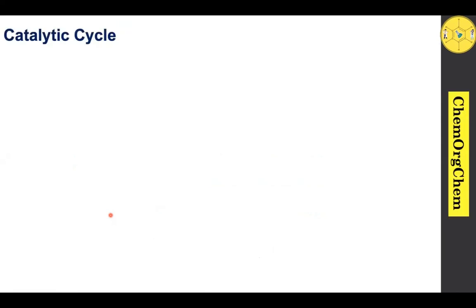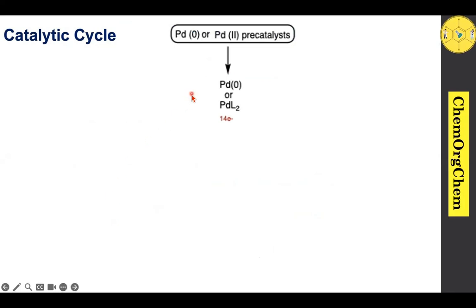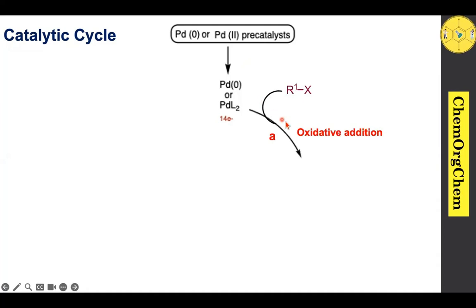The catalytic cycle, just like our previous catalytic cycles, starts with palladium(0) or a palladium(II) pre-catalyst. When you take the palladium(II) pre-catalyst with a suitable ligand, it generates in situ a palladium(0) species, which is a 14-electron species. This 14-electron species undergoes oxidative addition with an organotriflate or organohalide to produce the corresponding 16-electron species.